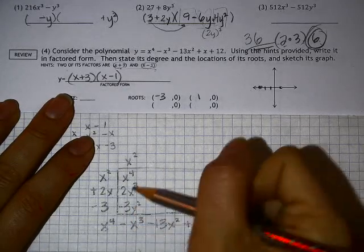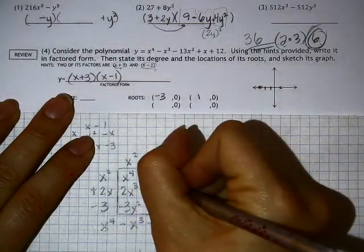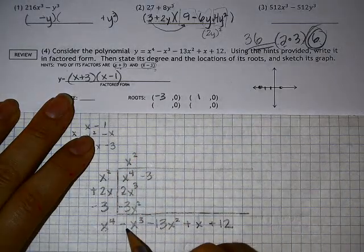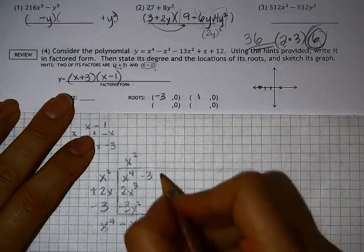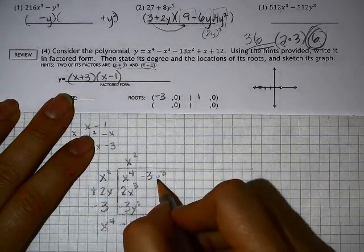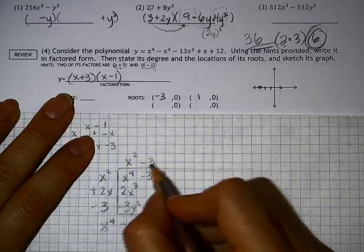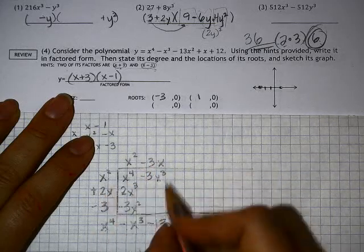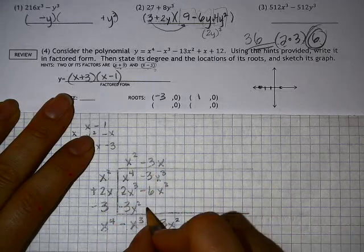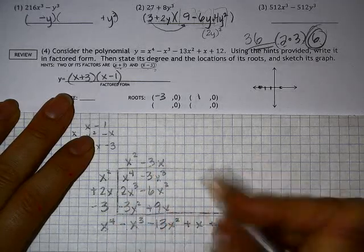So I need to have negative x cubed and I have a positive 2. So I'm going to do negative 3 because then those two will combine to give me my negative 1. And so then what I would need to have that happen would be negative 3 and an x. So that's negative 6x squared. And that is positive 9x.